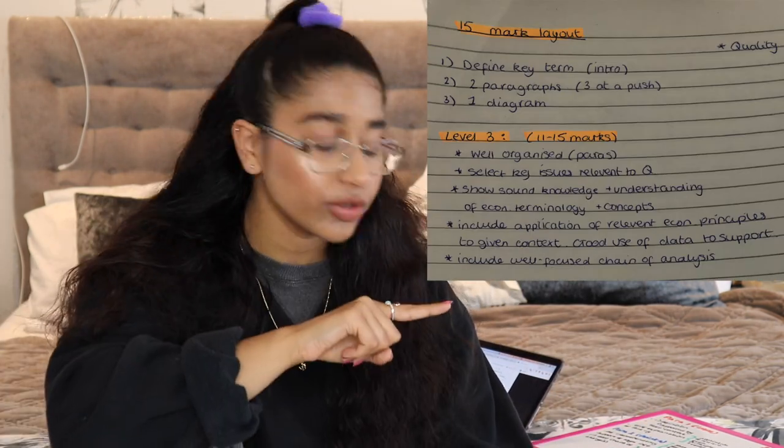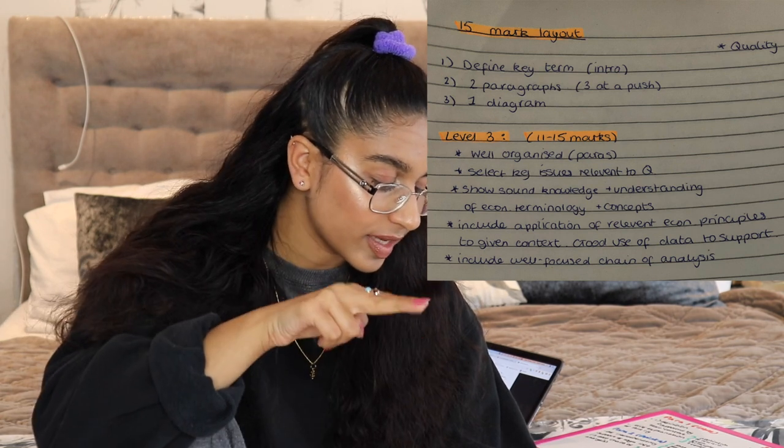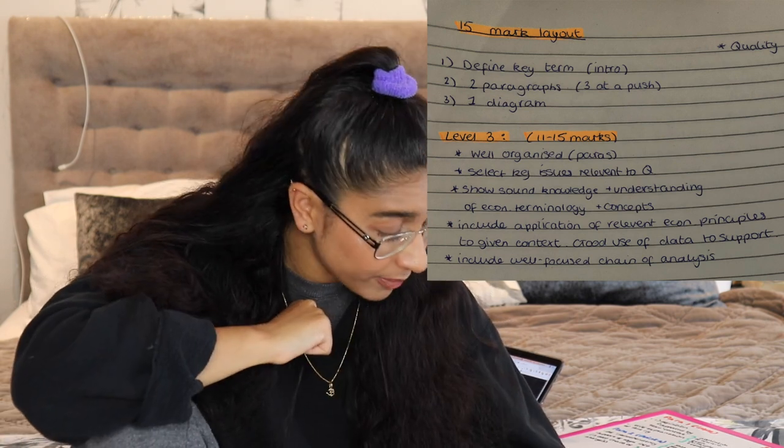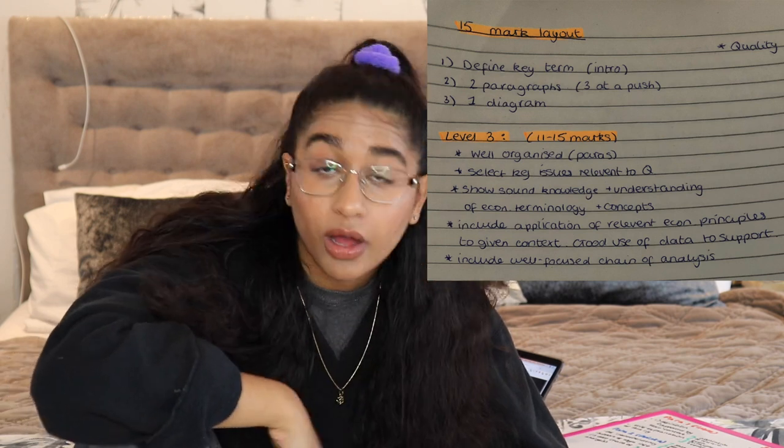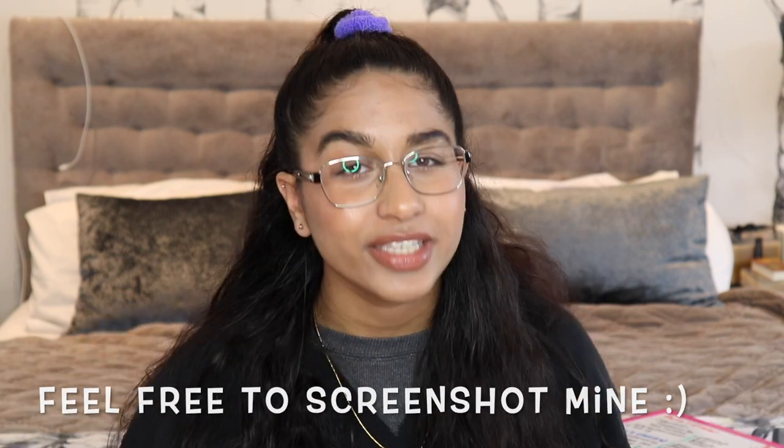Looking at the criteria overall: well-organized paragraphs — check. Select key issues relevant to the question — I talked about interdependence and uncertainty. Sound knowledge and understanding — check. Application of relevant economic principles — check. That's why I got 15 out of 15. The key takeaways are: number one, understand what the examiners are asking — know the criteria. Number two, know how you will structure your 15 marker. Number three, in your plan have at least one 'however it depends on' with support to elevate your answer. Thanks for watching — subscribe, like, and comment what you want to see next!